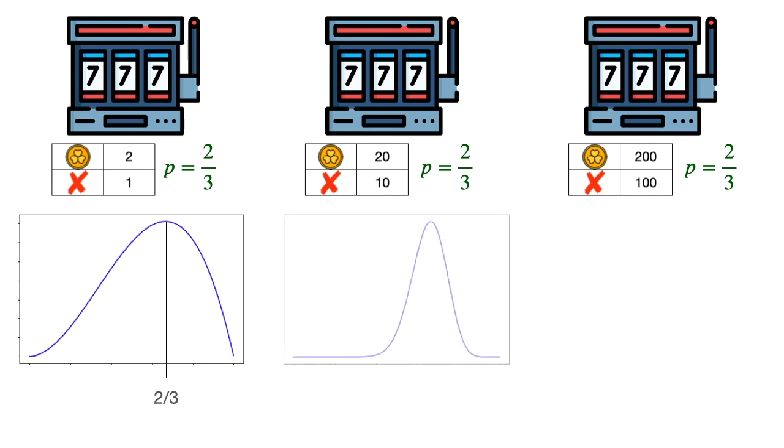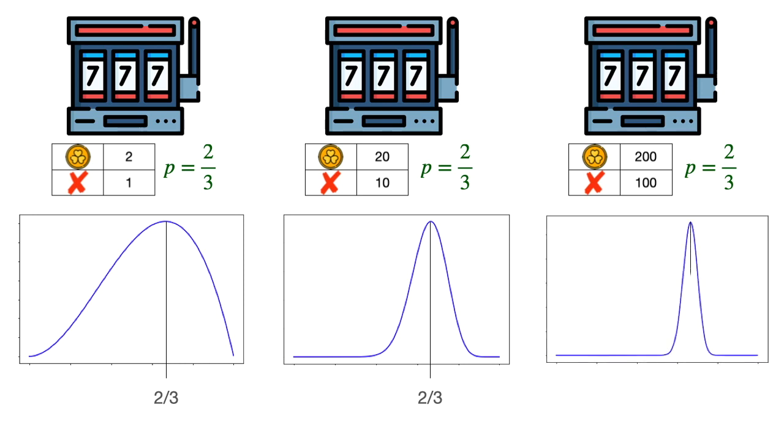On the other hand, here is the beta distribution for the second case. Again, the peak is at two-thirds and the p value can take many values, but most of them are much closer to two-thirds. So it's likely that p is close to two-thirds. And finally, here is the beta distribution for the third case. We peak again at two-thirds, but it's very skinny since most of the values that p can take are very, very close to two-thirds. Therefore, we have great confidence that the p value for this machine is something really close to two-thirds.